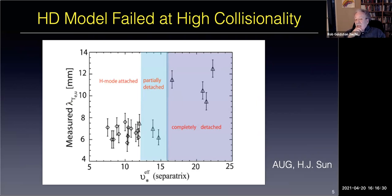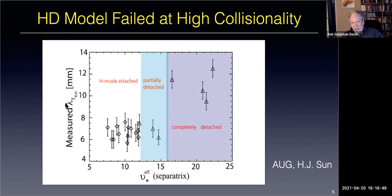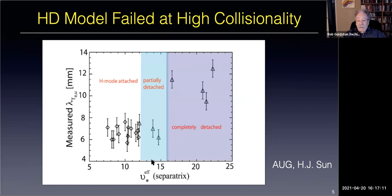This model fails at high collisionality. The first results came from H.J. Sun—called 'Sunny' by everyone at AUG and JET. She found that at higher collisionalities, measuring the upstream electron temperature with Thomson scattering, the width of the scrape-off layer in temperature—and therefore in power under Spitzer conductivity—got a whole lot wider as collisionality increased toward well-detached conditions. This was a hint that there was something more to figure out.